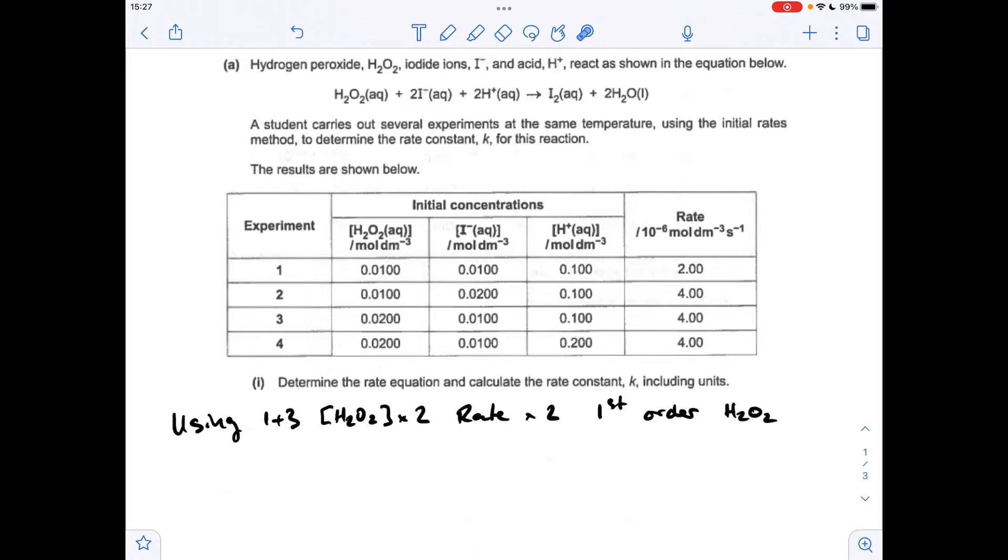Starting with hydrogen peroxide order, I'm using experiments 1 and 3. You can see that the hydrogen peroxide's doubled. I've used these two experiments because the iodide and H-plus concentrations haven't changed. So the H2O2 concentration's doubled, and the rate's doubled. That's first order with respect to hydrogen peroxide.